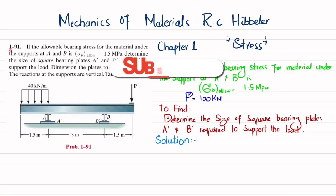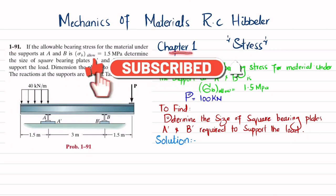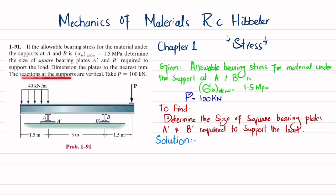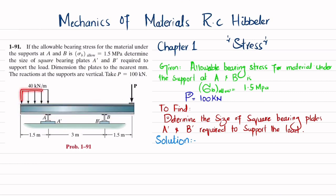Welcome back. In this video we are going to solve problem 1-91, taken from chapter 1 on stress, from the book Mechanics of Materials by RC Hibbeler. The statement is: if the allowable bearing stress for the material under the support at A and B is 1.5 MPa, determine the size of square bearing plates at A' and B' required to support the load. The beam has supports at A and B, a uniformly distributed load of 40 kN/m over 1.5 m, and a concentrated load P = 100 kN at the end.